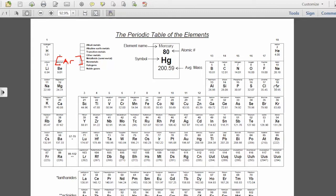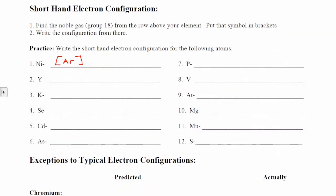Then I continue from there. After 3p6, I write 4s2 and then 3d8. So the only thing that's changed is rather than writing 1s2, 2s2, 2p6, 3s2, 3p6, I can just write argon in brackets.